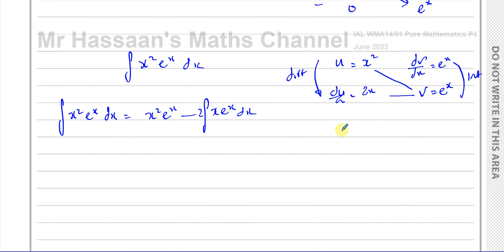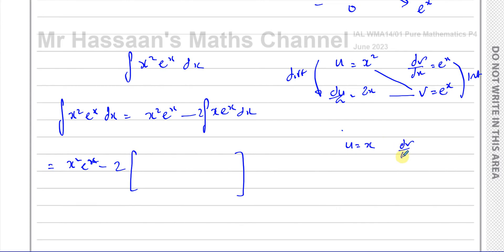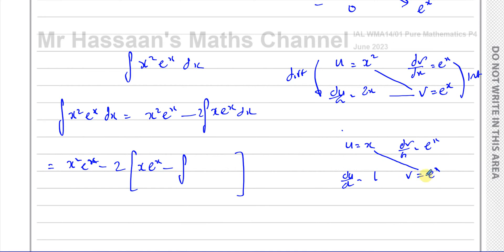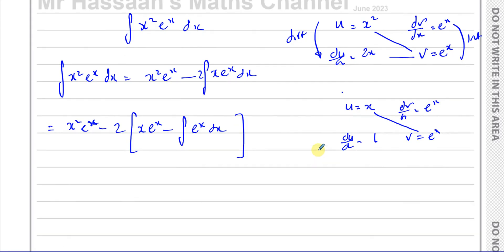So this equals x squared e to the power of x minus 2 times the integral of x e to the power of x dx. We integrate that bracket using parts again: u equals x and dv/dx equals e to the power of x, giving du/dx equals 1 and v equals e to the power of x. So we get x times e to the power of x minus the integral of e to the power of x dx.